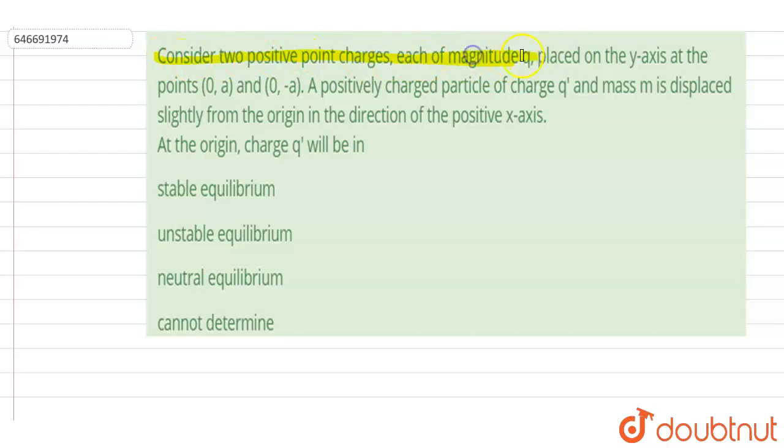Hello everyone. Consider two positive point charges, each of magnitude q, placed on y-axis at (0, a) and (0, -a). A positively charged particle of charge q' and mass m is displaced slightly from the origin in the positive x direction.